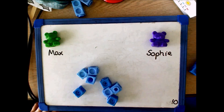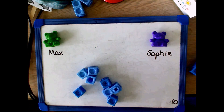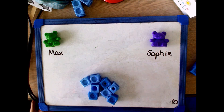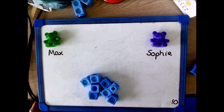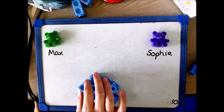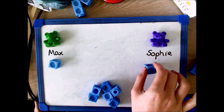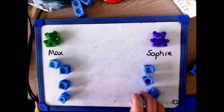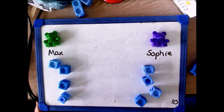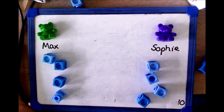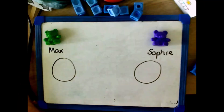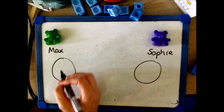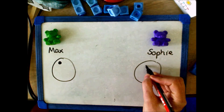Children need to understand the concept of sharing into equal groups, and it is important that they complete this systematically. For example, Max and Sophie need to share 8 sweets equally between them. Children share the sweets one at a time to each person, so 8 shared between 2 is equal to 4. Children can use a range of methods to solve these problems, such as drawing pictures to represent the counters.